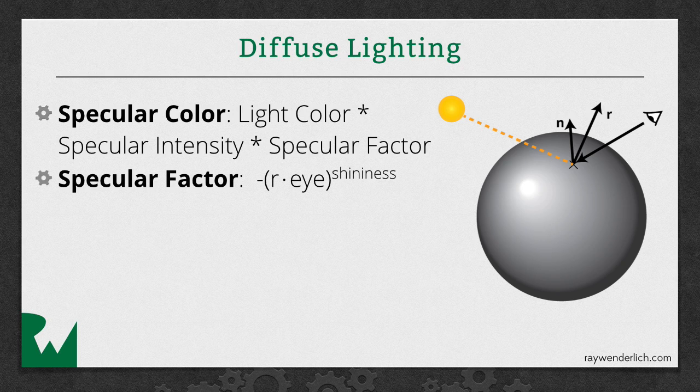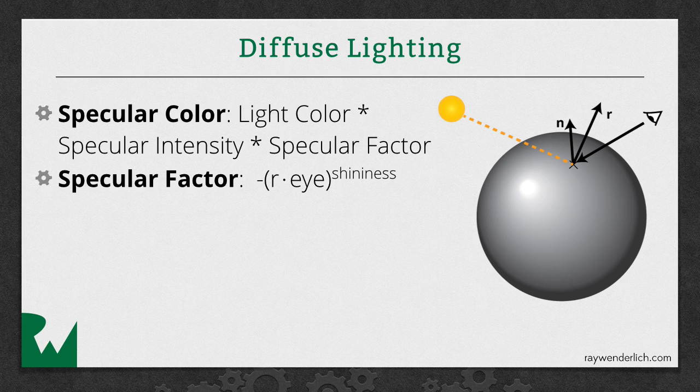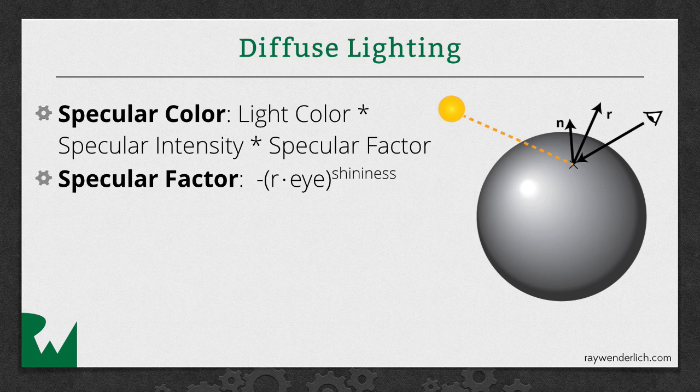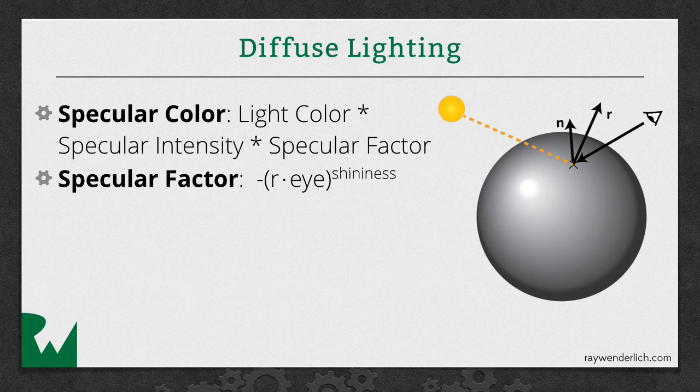So the way we do this is, yet again, with our friend, the dot product. So we do negative r dot eye, which will give us a 1 if it's pointing exactly toward or a 0 if it's pointing away or less. And we raise that to a shininess. And the shininess just means the bigger the shininess is, the faster it'll fall off. And visually, it'll have the effect of being a more condensed area, more of a small little shiny area, the bigger the shininess becomes.